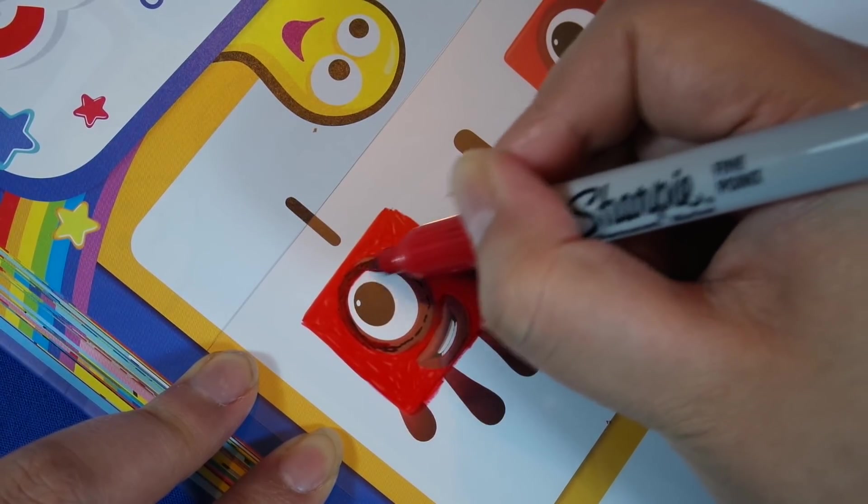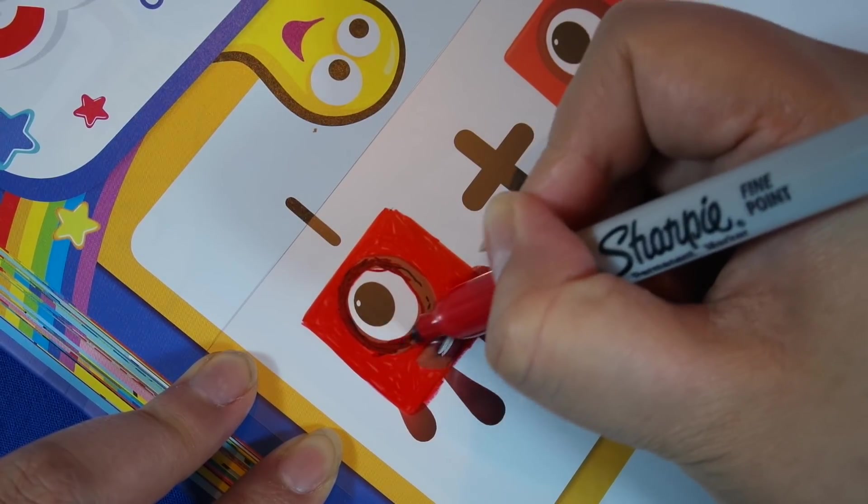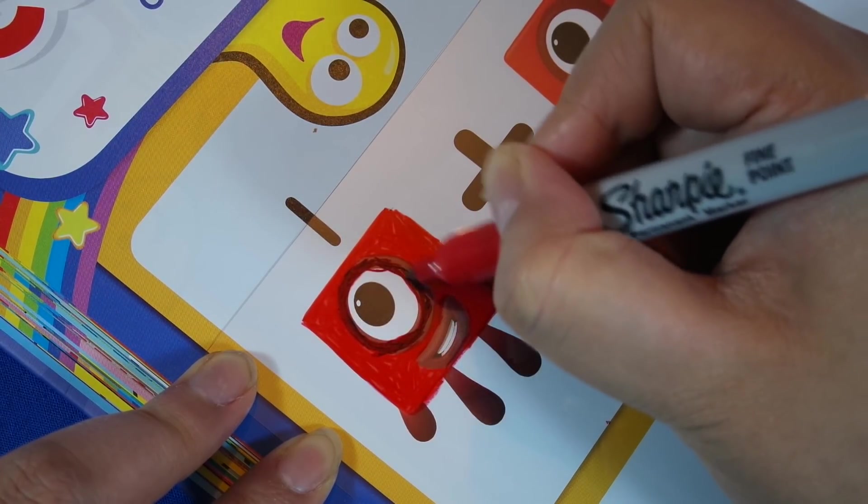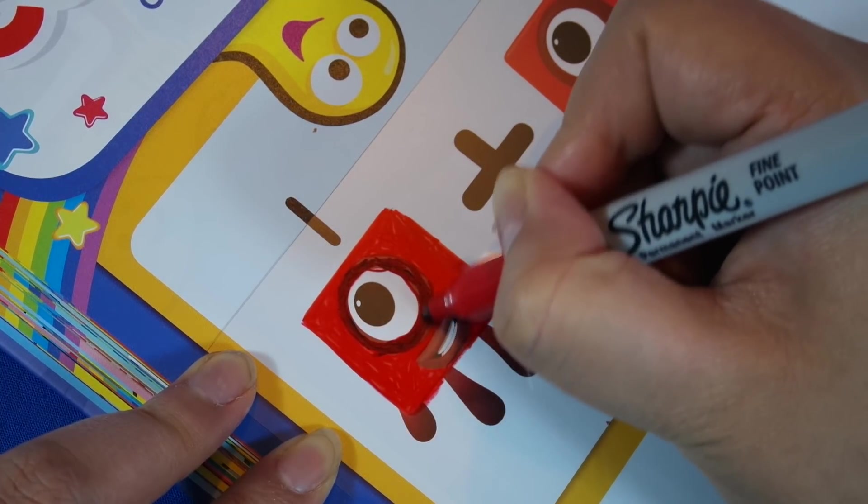Now they don't have a dark red in this kit, only a bright red. So what I'm doing is I'm trying to mix it with a bit of black and seeing if it will blend to make that darker red shade that's around Number Block One's eyes.